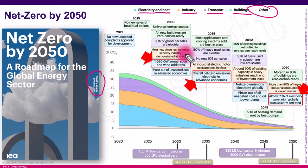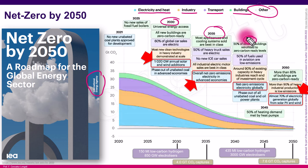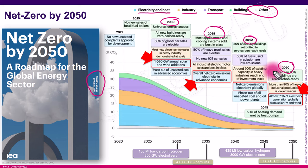What is very relevant is that for 2030, we are assuming 1,020 gigawatts of annual solar and wind addition. For 2035, net zero emissions in the electricity sector will be reached by the main advanced economies worldwide. By 2040, net zero emissions will be reached globally, and by 2050, almost 70% of electricity generation will be based on solar PV and wind power — a very ambitious target.